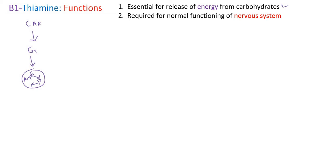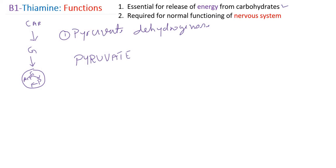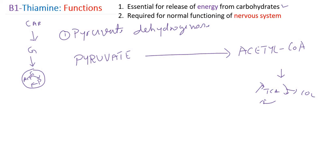In the catabolism of carbohydrate, especially glucose, we require thiamine pyrophosphate. In carbohydrate metabolism, we have an enzyme called pyruvate dehydrogenase. Glucose undergoes glycolysis and is converted to pyruvate, then pyruvate is converted to acetyl-CoA. For this particular reaction, the enzyme is pyruvate dehydrogenase — a multi-enzyme complex — and we require thiamine pyrophosphate as the coenzyme.